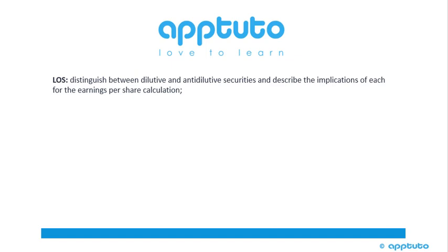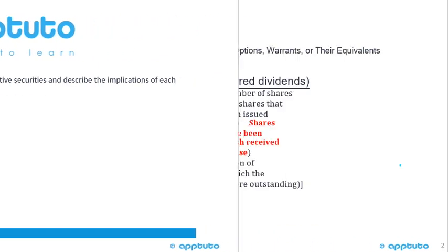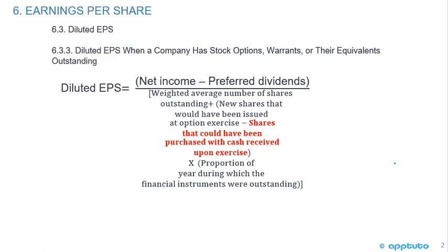This LOS distinguishes between dilutive and anti-dilutive securities and describes the implications of each for the earnings per share calculation. We're looking at earnings per share — specifically diluted EPS.